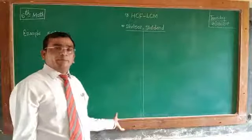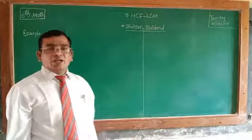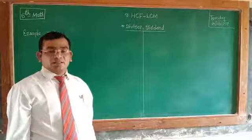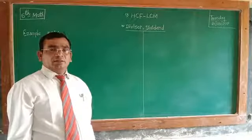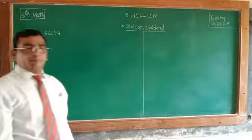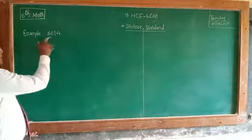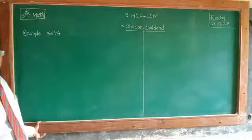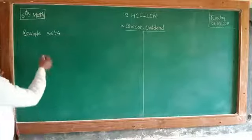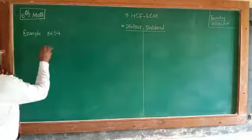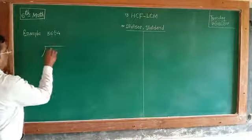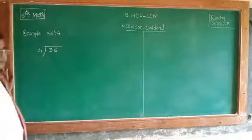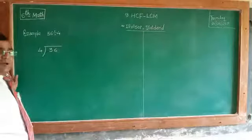We are going to learn about the divisor and dividend. Now, 36 divided by 4. Therefore, 36 divided by 4 is 9.